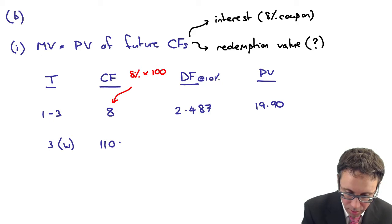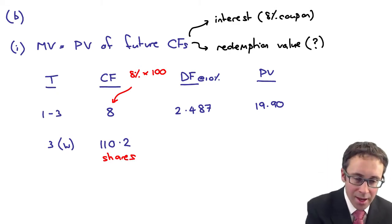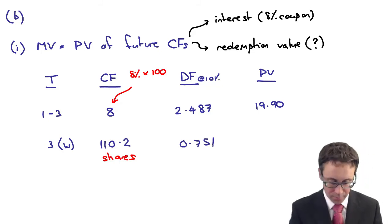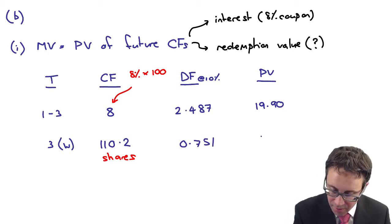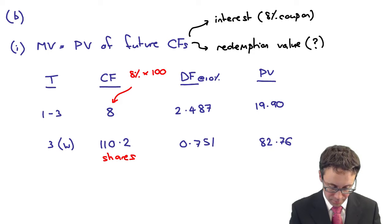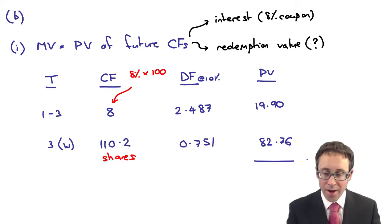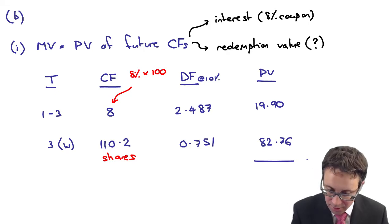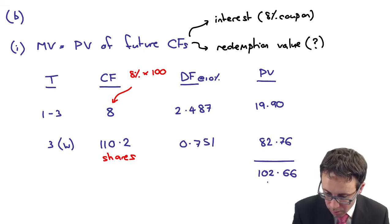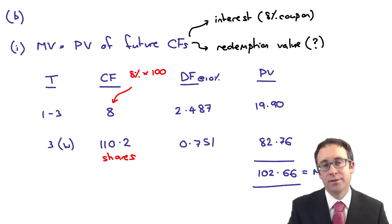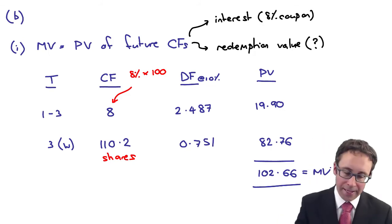So therefore, we will put in the redemption value as that of the shares. A discount factor at three years at 10%, 0.751. Does that give me 82.76? Excellent. When we add those up, 19.9 plus 82.76. Does that give me 102.66? That there is the market value of the debenture, the convertible debenture. Excellent.